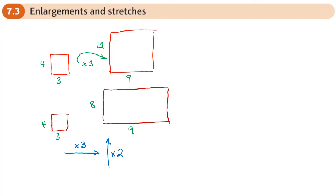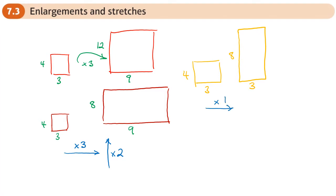Last example: starting with the same shape of three and four, we might end up with something like eight and three. In this case, there's no stretch in the x direction, but in the y direction we've got a stretch of two. So stretches are basically enlargements of different values in the x and the y direction, whereas an enlargement is the same in both directions.